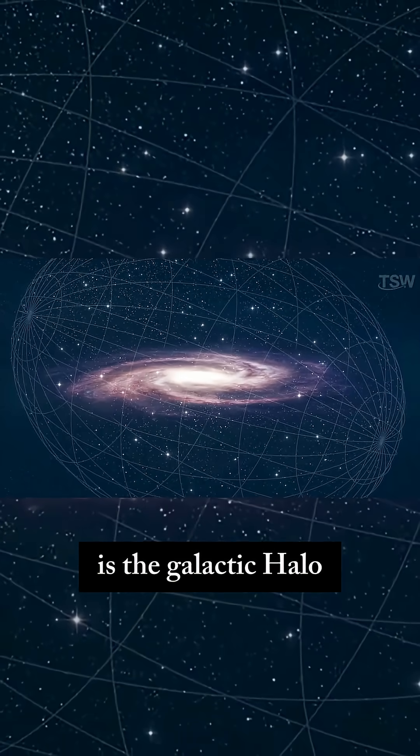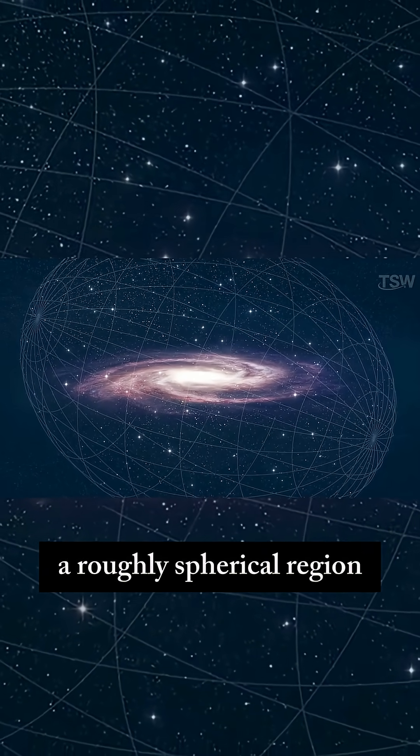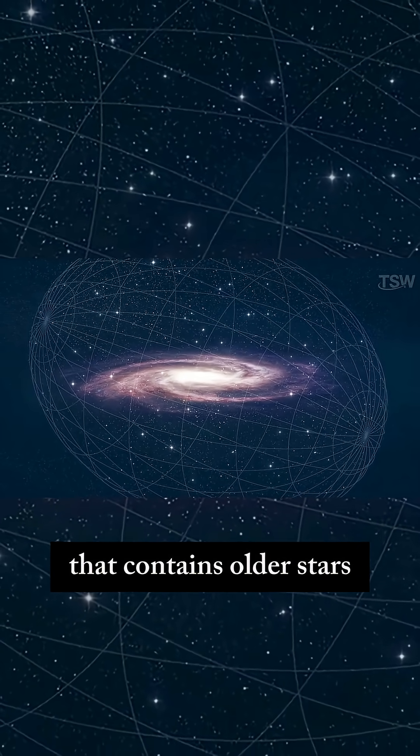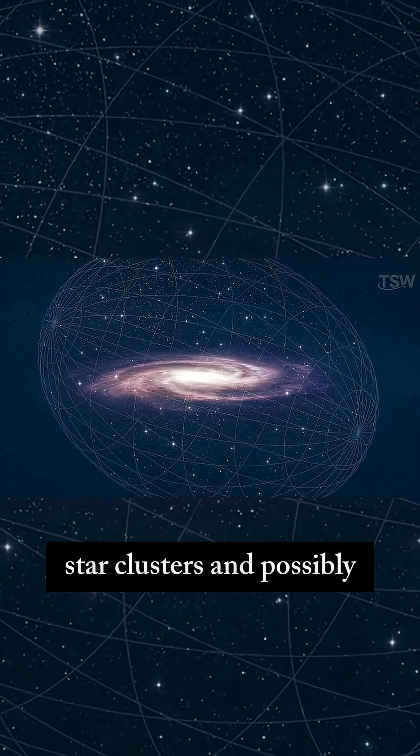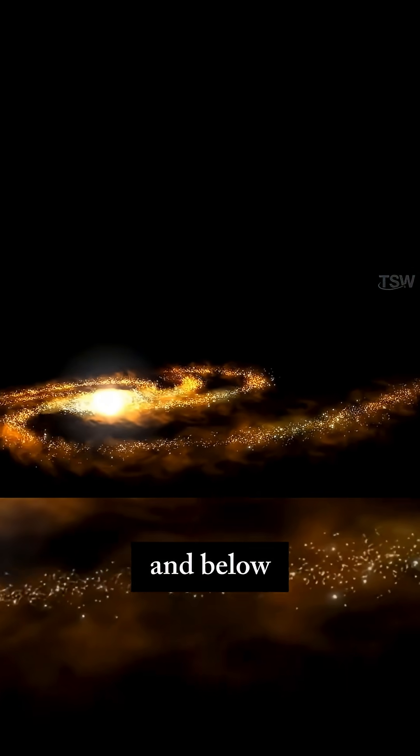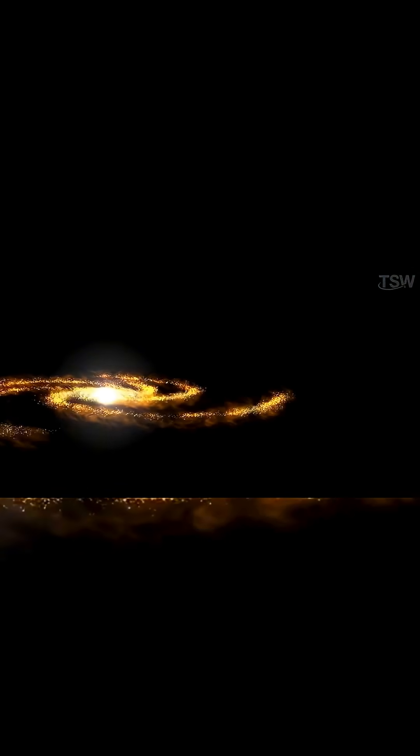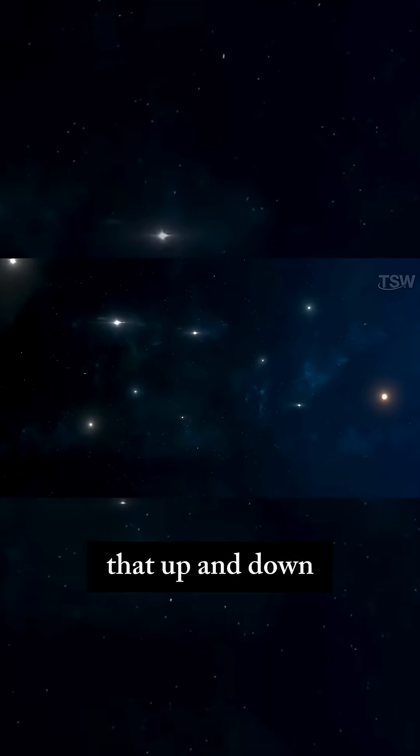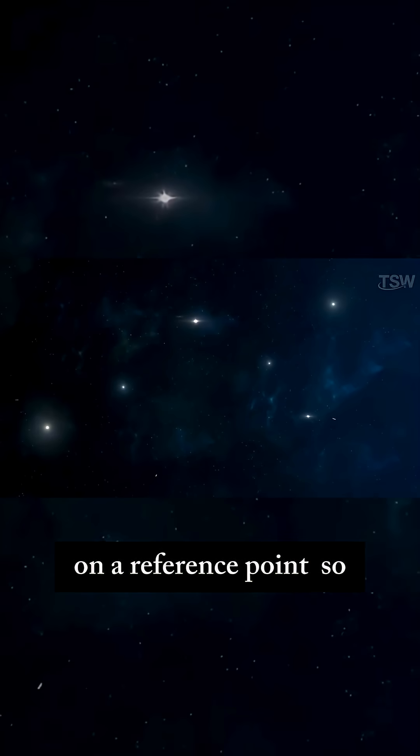Around the galaxy is the galactic halo, a roughly spherical region that contains older stars, star clusters, and possibly large amounts of dark matter. This halo extends far above and below the main disk of the galaxy, showing once again that up and down are only meaningful if we agree on a reference point.